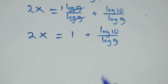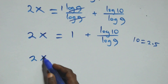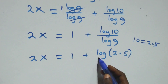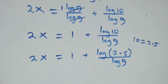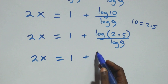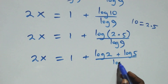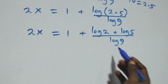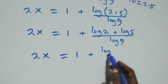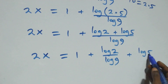Also here we can write 10 as 2 times 5. Which implies here we have 2x equals to 1 plus log(2 times 5) over log 9. Here we also apply the law of logarithms, and this becomes 2x equals to 1 plus (log 2 plus log 5) over log 9. Which implies, here we separate these into two fractions and we have 2x equals to 1 plus log 2 over log 9 plus log 5 over log 9.